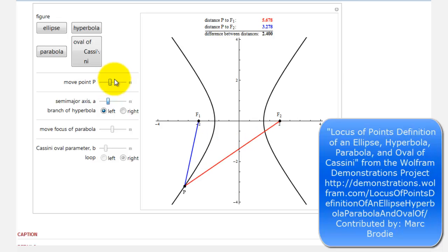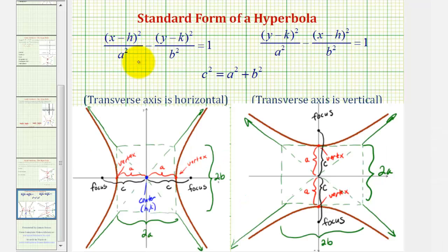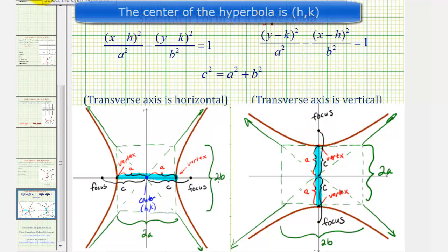Now let's review the standard form of a hyperbola. If the equation is in the form where we have the quantity x minus h squared first and then minus the quantity y minus k squared, we'll have a horizontal transverse or major axis. But if the equation is in the form of the quantity y minus k squared minus the quantity x minus h squared, we'll have a vertical transverse axis or vertical major axis.